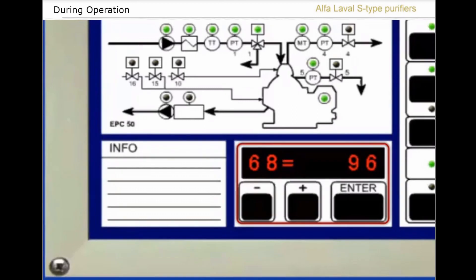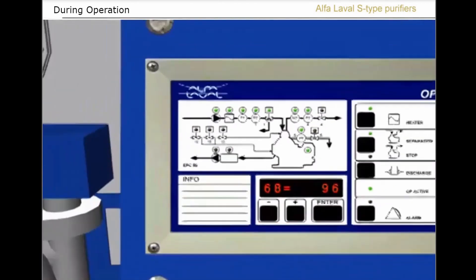To return to the normal display, for example, the current program number and time to next sludge discharge, continue pressing the plus button. Alarms are also indicated on the display.